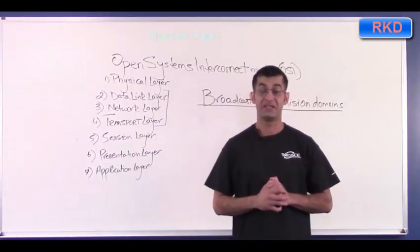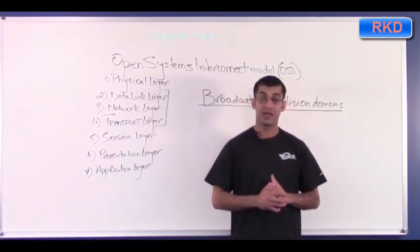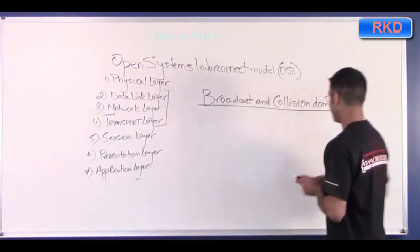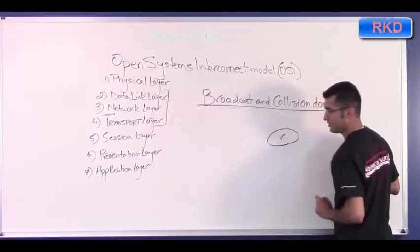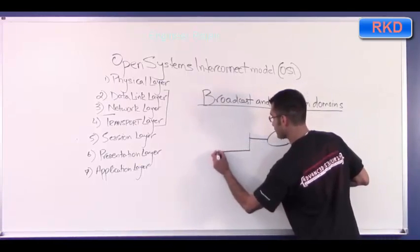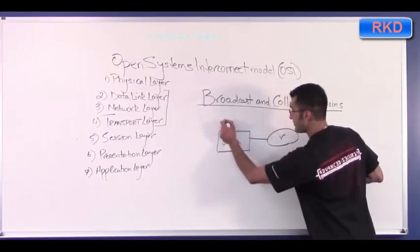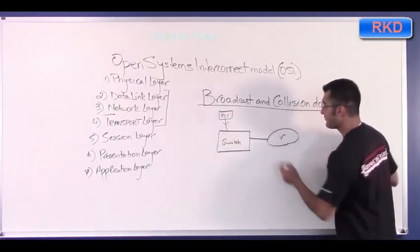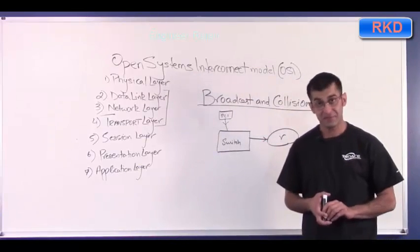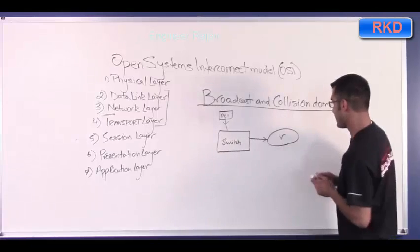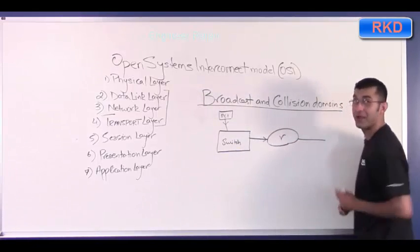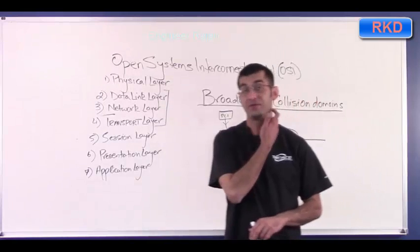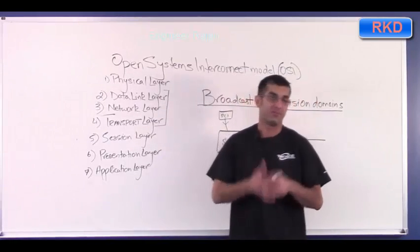Routers, on the other hand, break up broadcast domains — a broadcast cannot traverse a router. So if you have a router with a switch and some PCs attached, and PC one sends out a broadcast frame, that frame will reach the router and the router will drop it by default. Routers break up broadcast domains; a switch is one big broadcast domain in itself. And a hub, since it always floods, is also one big broadcast domain.